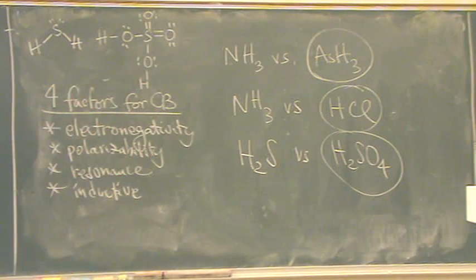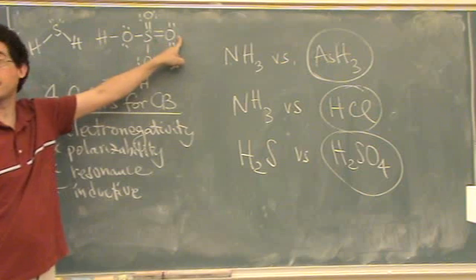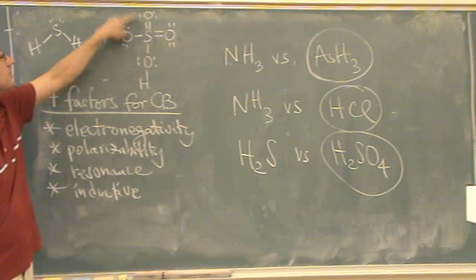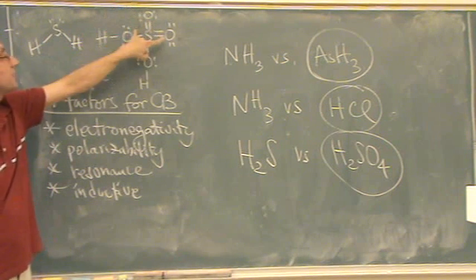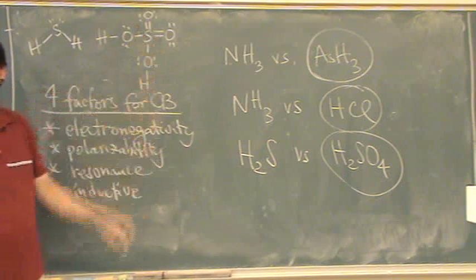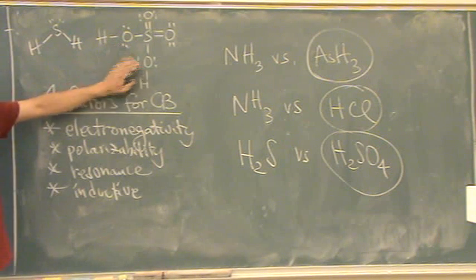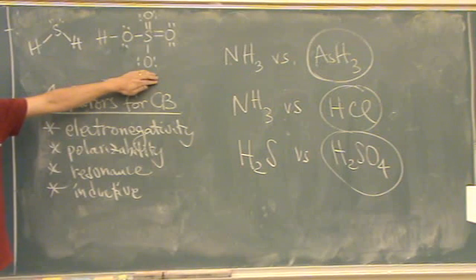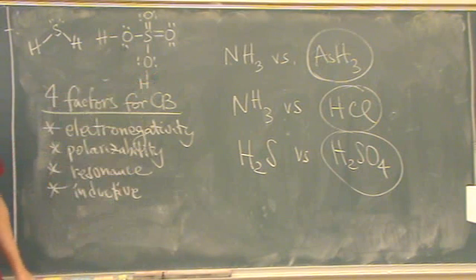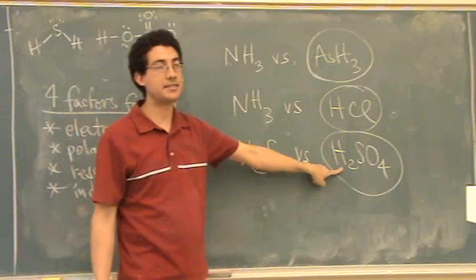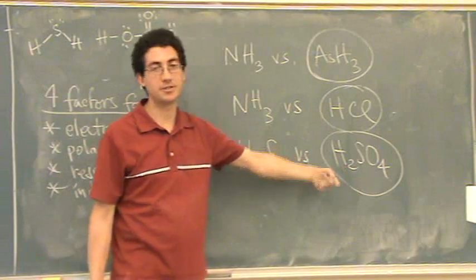There's tons of resonance structures because you could make this a single bond and put the lone pair here. You could make this a single bond and put the lone pair here. You could make them both single bonds. So there's a bunch of fun stuff you could do there, moving the electrons around a lot. Okay? So this will have lots of resonance once you take off the hydrogen.